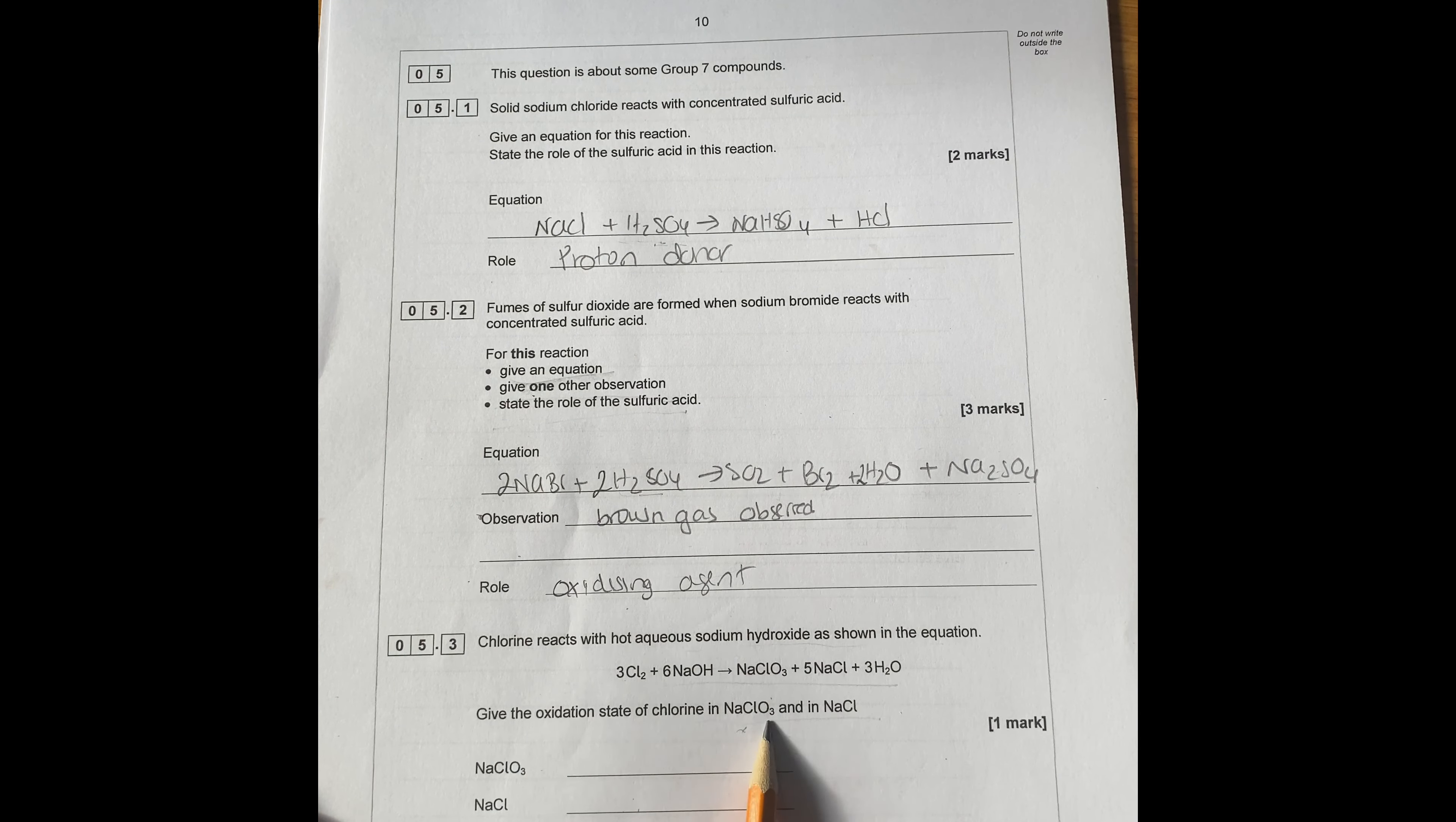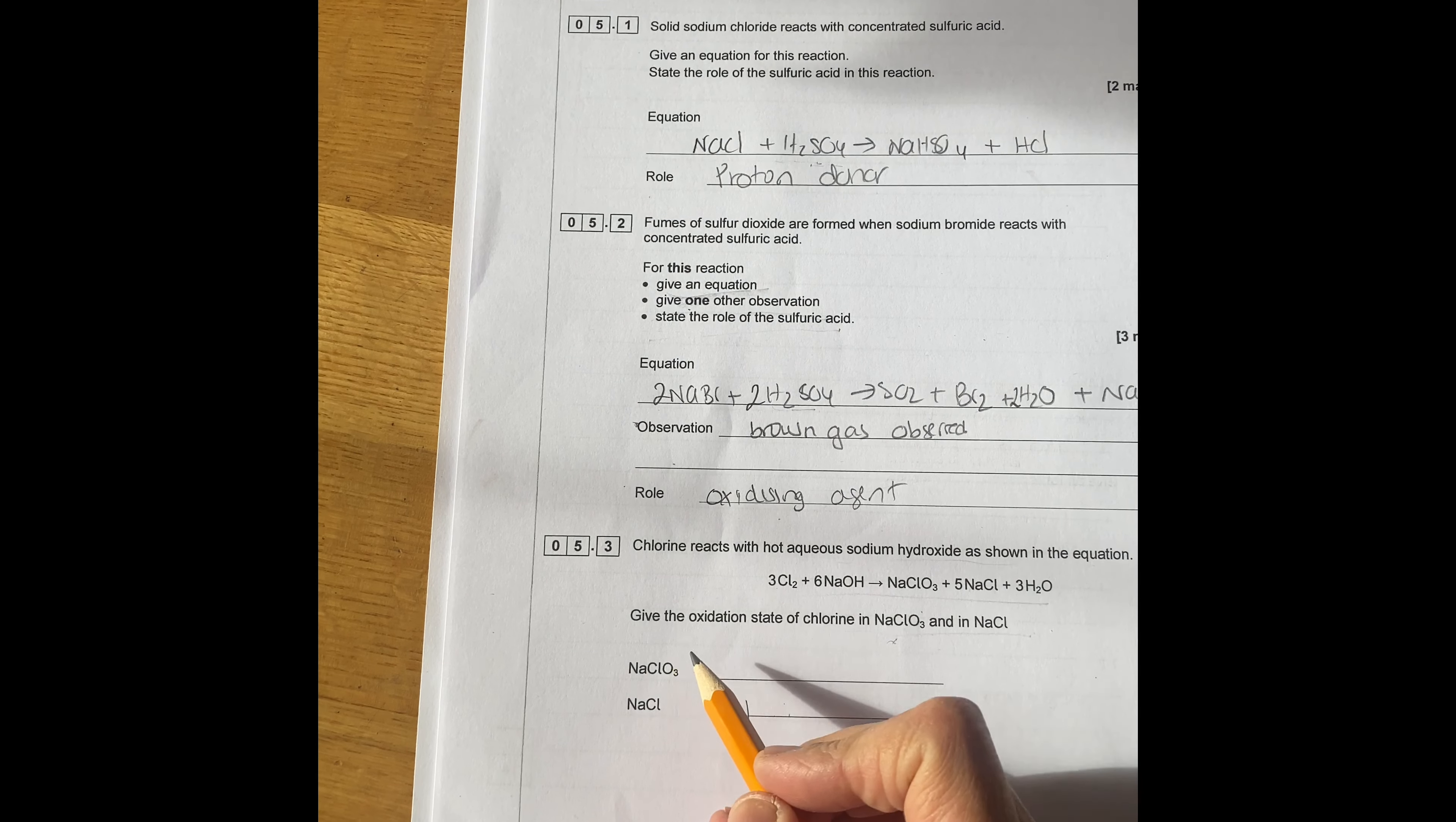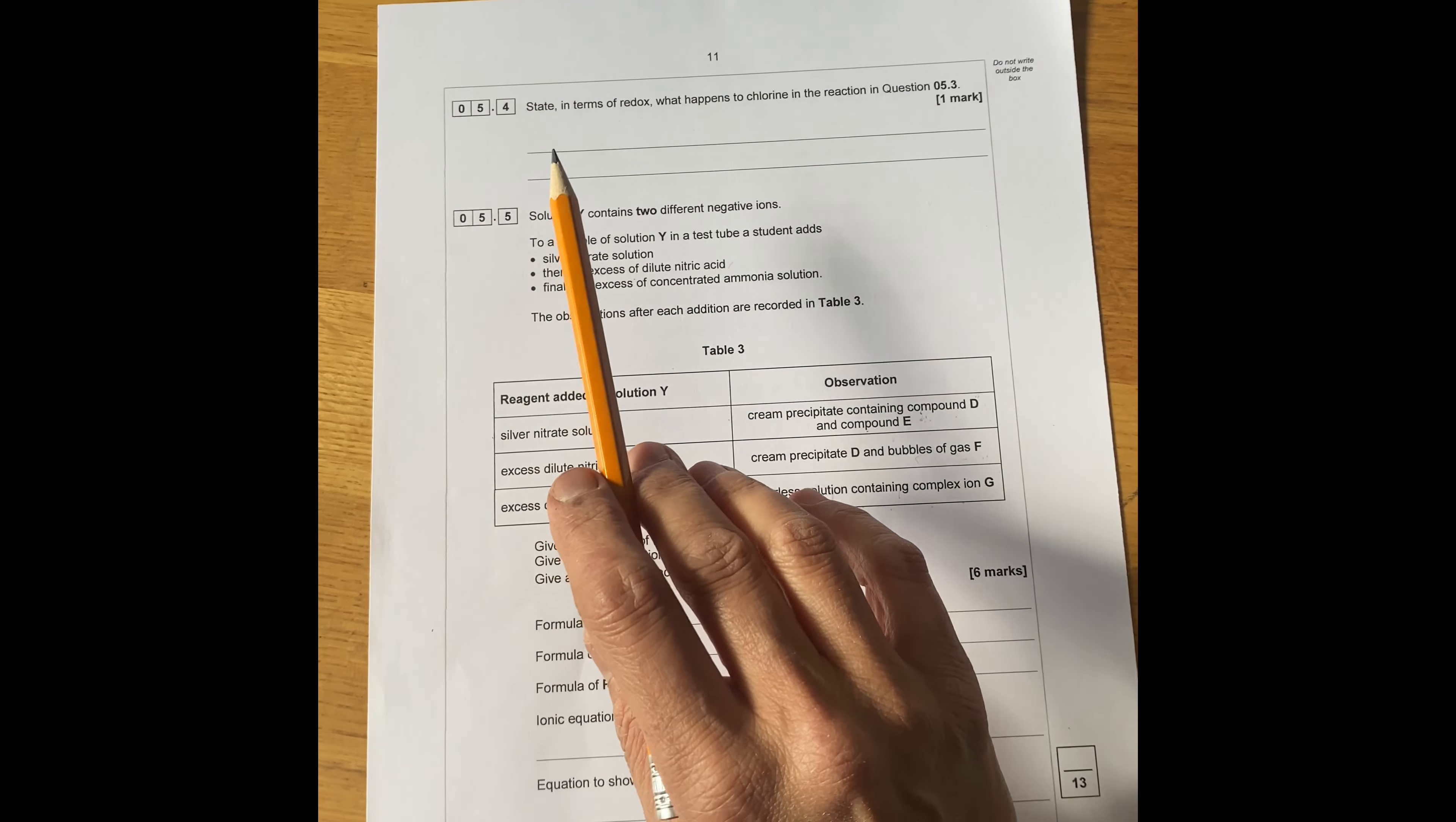Chlorine reacts with hot aqueous sodium hydroxide as shown below. Give oxidation state of chlorine in sodium chloride and sodium chlorate. So here is minus one. Here you're going to do the oxidation state - oxygen is minus two, so minus six plus one hydrogen, therefore becomes plus five.